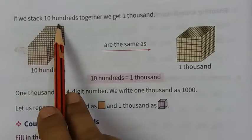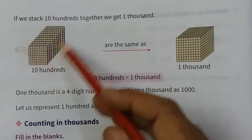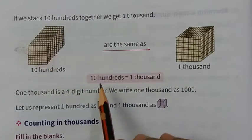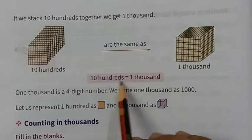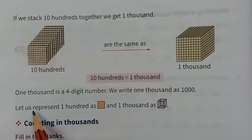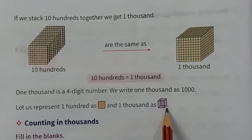Now on page number 4, if we stack 10 hundreds together we get 1 thousand. Now if we collect 10 hundreds, how will it become 1 thousand? So 10 hundreds is equal to 1 thousand.